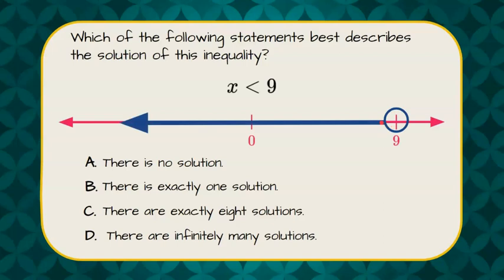And then it's all the values, so we'll shade all the values less than 9. X less than 9, so any number that is not 9, but is less than 9.